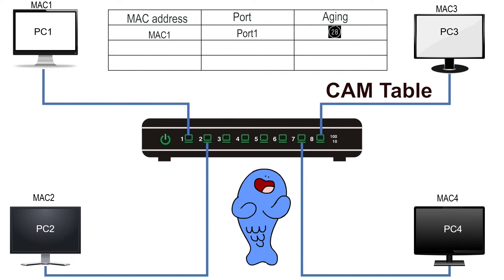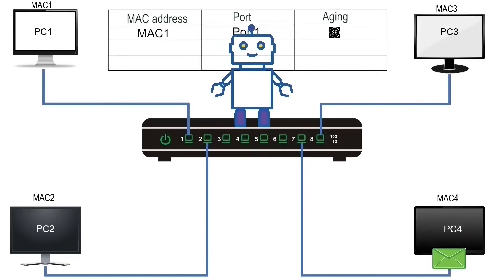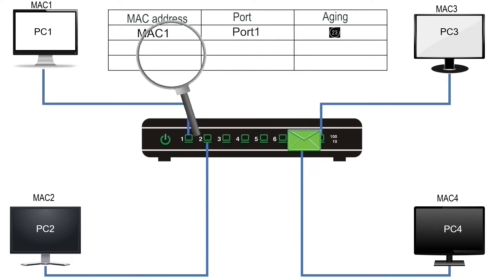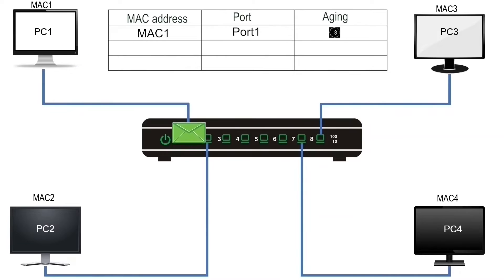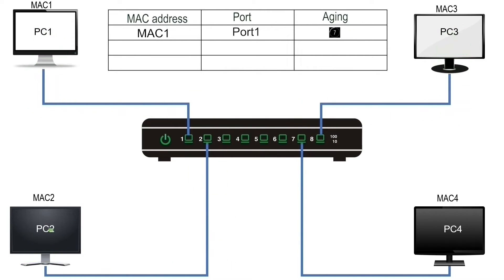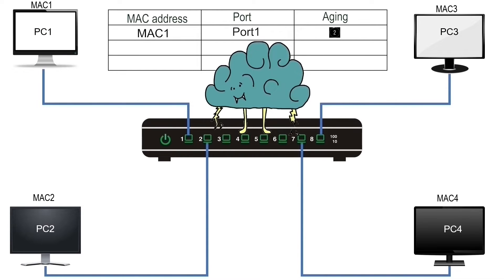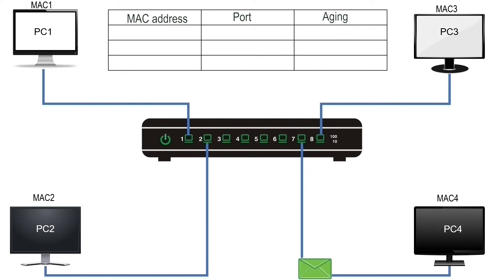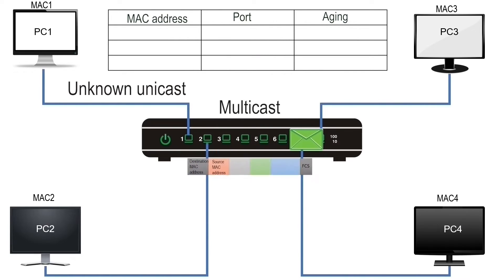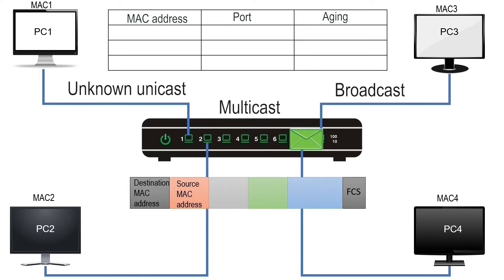This feature makes the relocation of devices completely hassle-free. A switch uses a relatively simple concept to forward a frame. It finds the destination MAC address of the incoming frame in the CAM table. If the CAM table has an entry for the destination MAC address, it forwards the frame from the port mentioned in the entry. If the CAM table does not have an entry for the destination MAC address, it forwards the frame from all ports except the port on which it arrived. This process is called frame flooding. A switch floods a frame if it has an unknown unicast, multicast, or broadcast address in the destination address field.